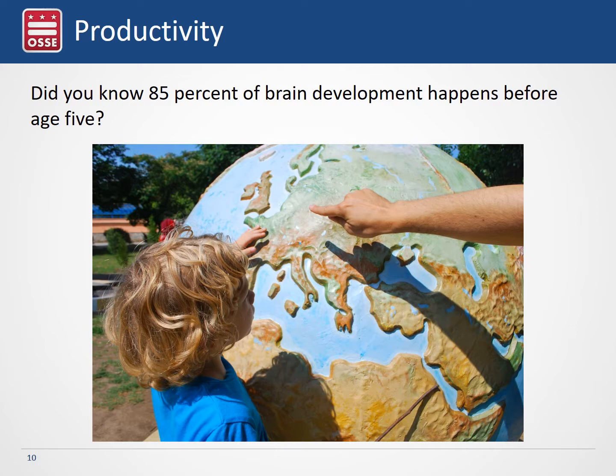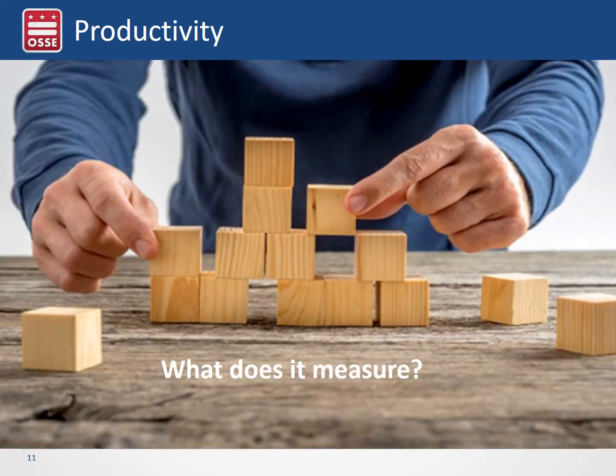Think about the role productivity plays in the brain development of a young child. Did you know that 85% of all brain development occurs before age 5? Productivity measures classroom organization. Within the CLASS, it measures four critical areas: maximizing learning time, routines, transitions, and teacher preparation.